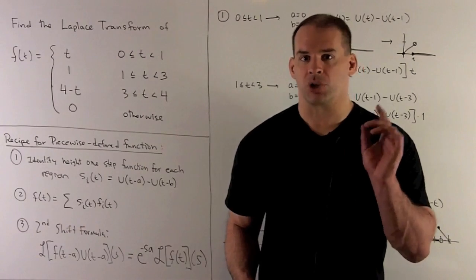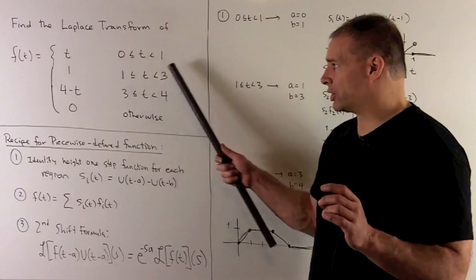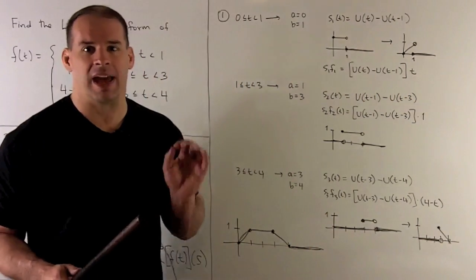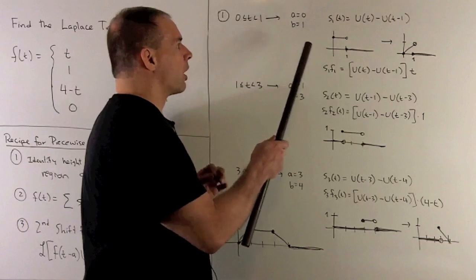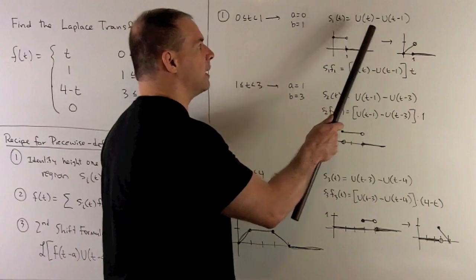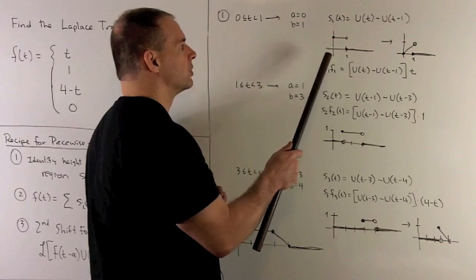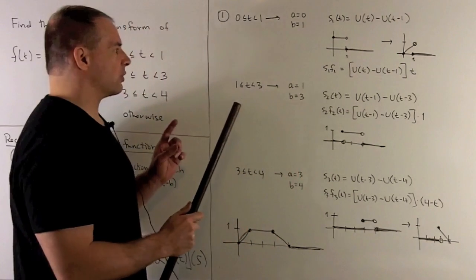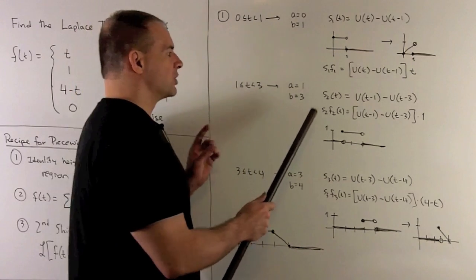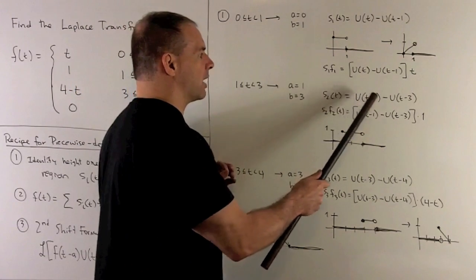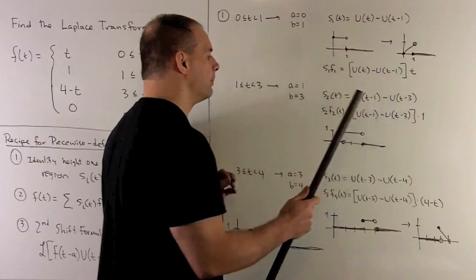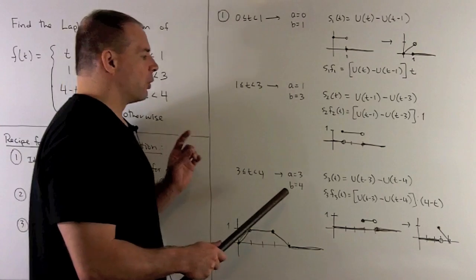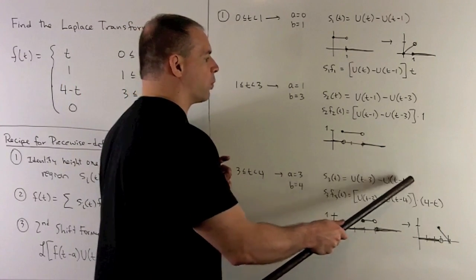For our special case, let's get our step functions first. For the first region, the endpoints are 0 and 1, so the first step function is u(t) minus u(t minus 1). For the second region, a is 1 and b is 3, so we get u(t minus 1) minus u(t minus 3). For the third region, endpoints are 3 and 4, giving u(t minus 3) minus u(t minus 4).